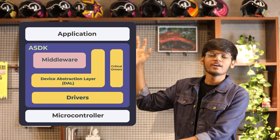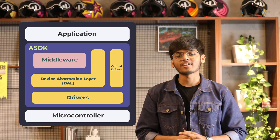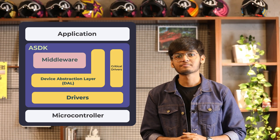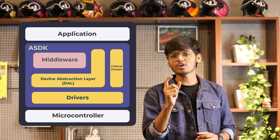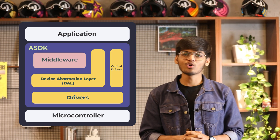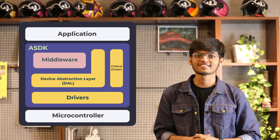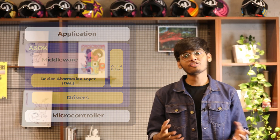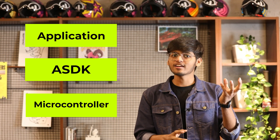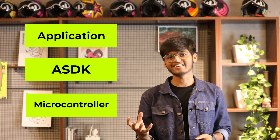This diagram here represents an ASDK software architecture. It might look a little complex at first, but don't worry, we'll break it down piece by piece. Think of it as a multi-layered structure where one layer is built upon the other.